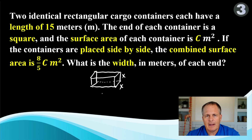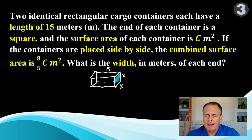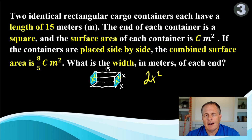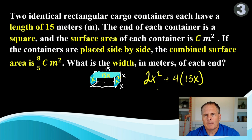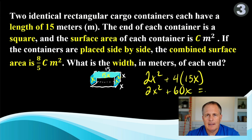First, let's find the area of one crate. If we imagine painting one end, the area that would be painted would be x squared. There's a matching square on the other end, so now we have 2x squared. Now let's paint the side of the container — that's going to be an area of 15x. There are four of those sides, so that's 60x. The problem tells us to call the total surface area c, so we will set it equal to c.